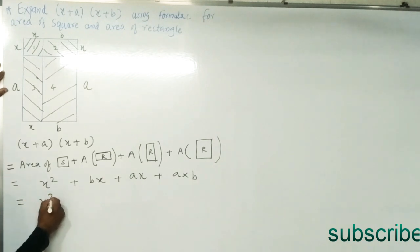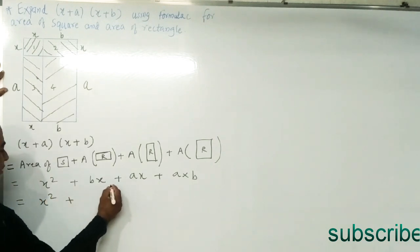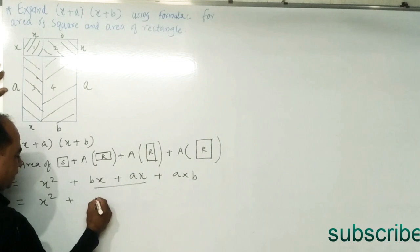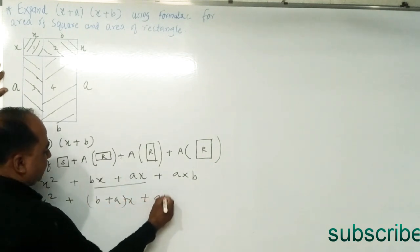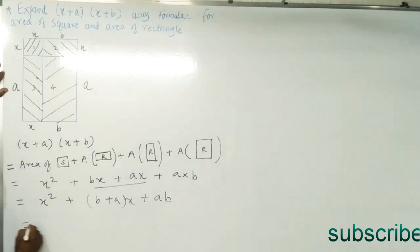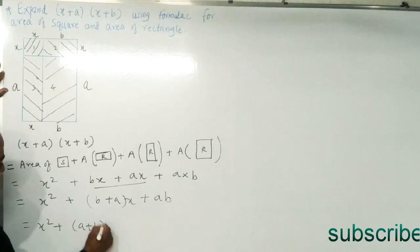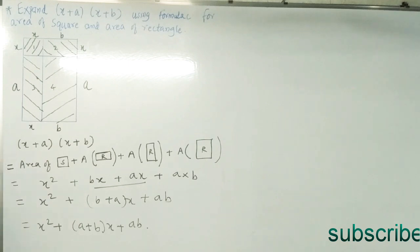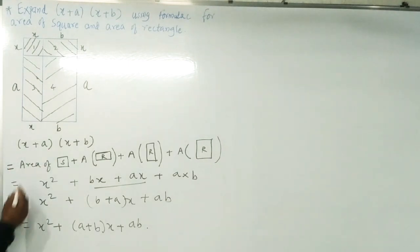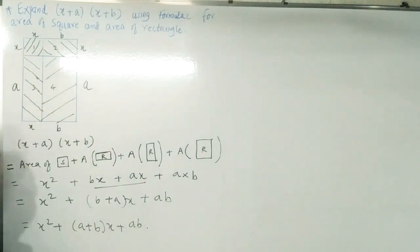So we get that (x + a)(x + b) is equal to x squared, and here x is common in bx and ax, so we get x squared plus (a + b)x plus a times b. This is the expansion of (x + a)(x + b) using the area figure.